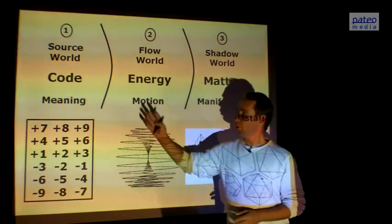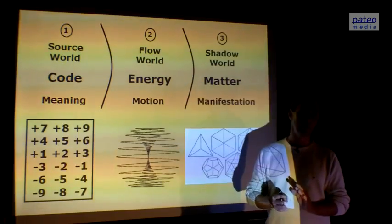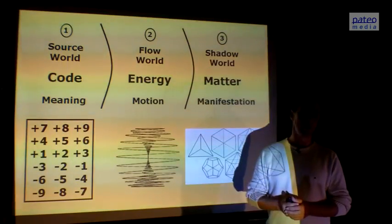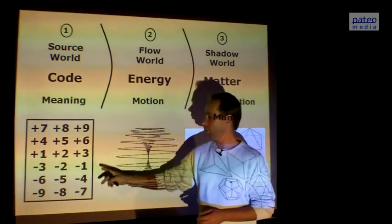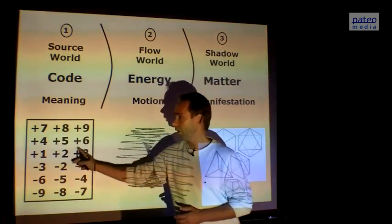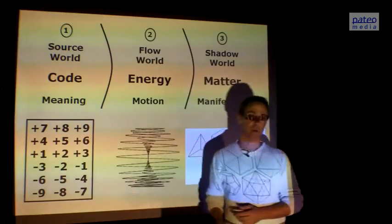The source world is all about the code. And in fact, there are only 18 different codes. The ciphers 1 up to 9, having a positive charge or a positive value, meaning female or yin, or a negative value, meaning yang.